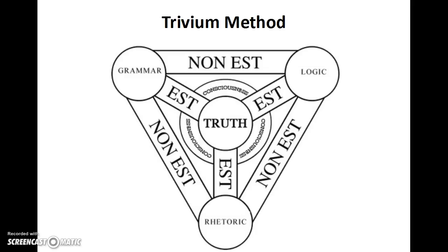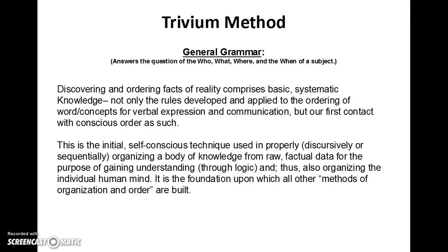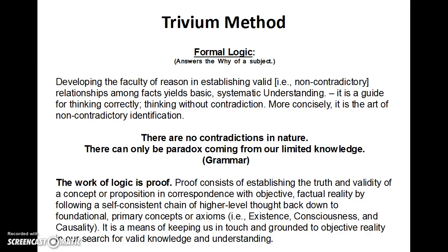This is my methodology — the trivium. It's a great method that has been lost for a very long time. It works like a screw: it always goes in one direction — grammar, logic, rhetoric. General grammar is to ask the who, what, where, and when of a subject to gather data and organize it into a body of knowledge. Next, we use formal logic to create non-contradictory statements and non-contradictory identification of things.